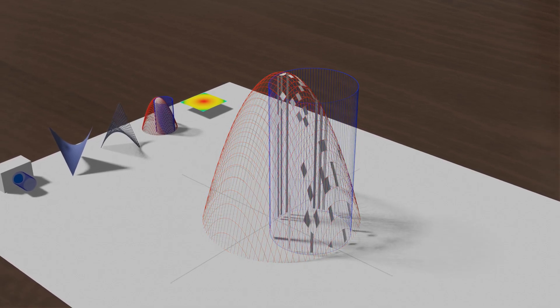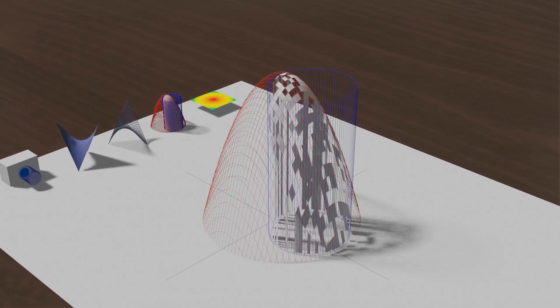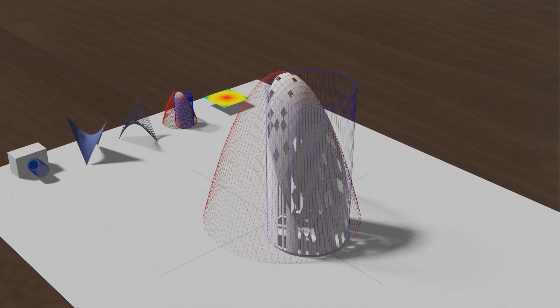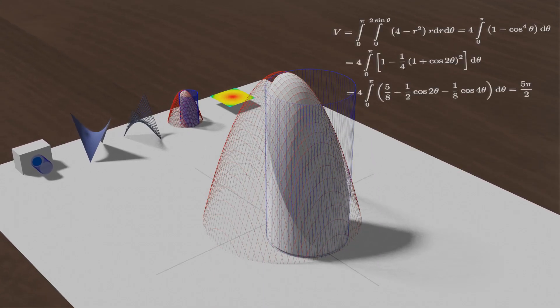Now, we need to calculate the integral. If we choose polar coordinates, then the boundaries will be for r from zero to two sin theta, and for theta from zero to pi. And in a few steps, we will get these results.